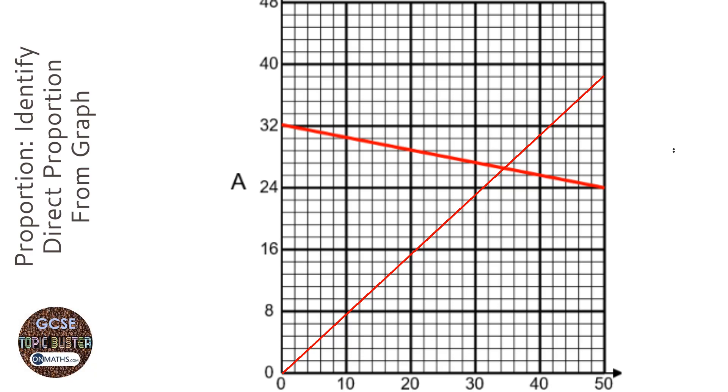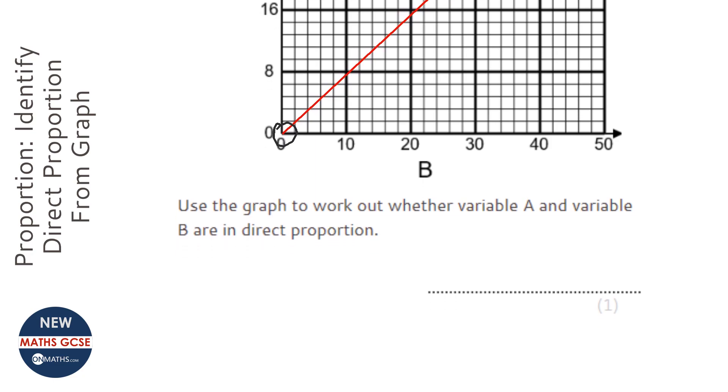So the one I've just drawn now is in direct proportion. But here you can see that it doesn't start at the origin, and if it did start at the origin it wouldn't be able to go down. It is a straight line though, but because it doesn't start at the origin...